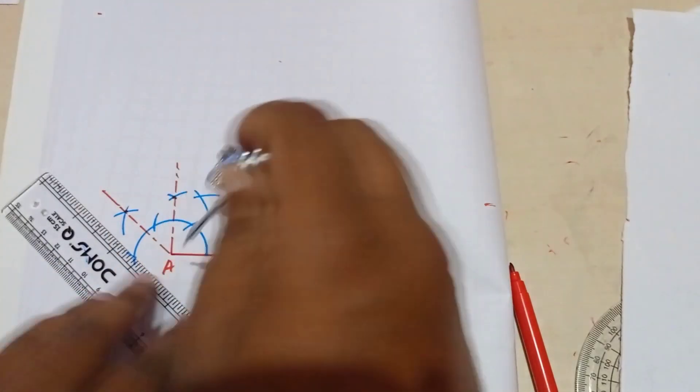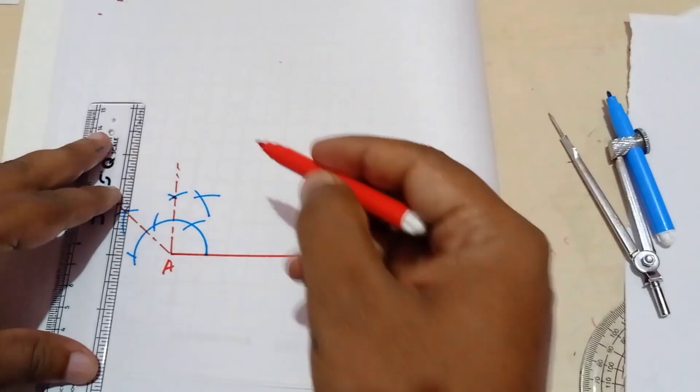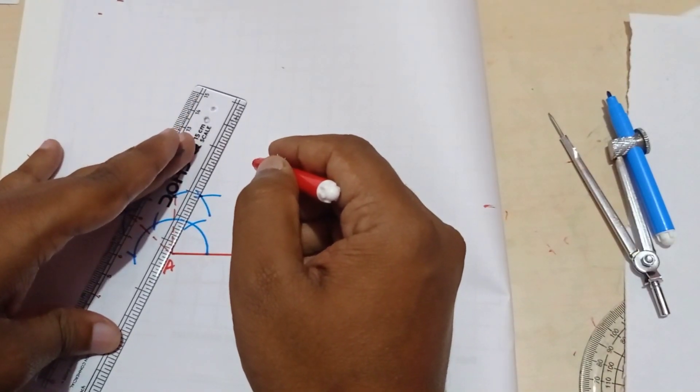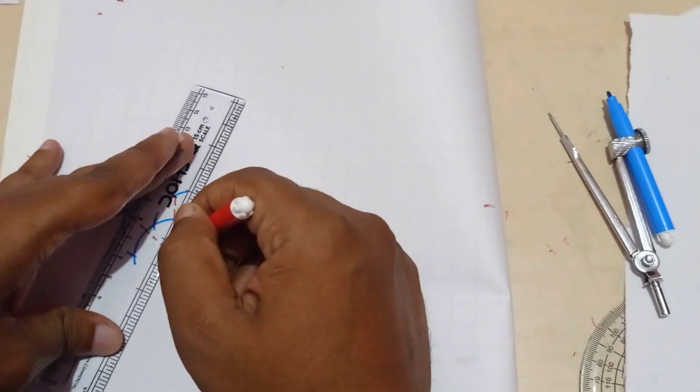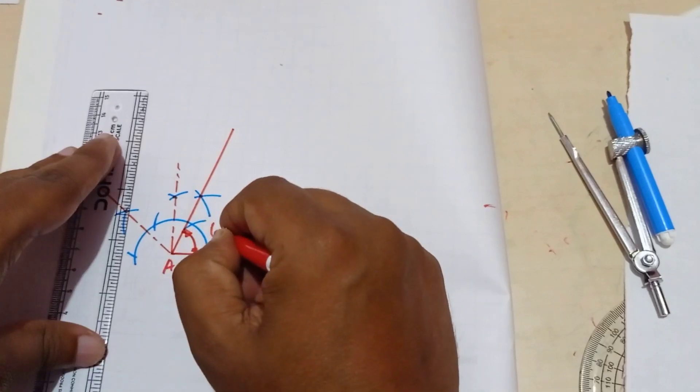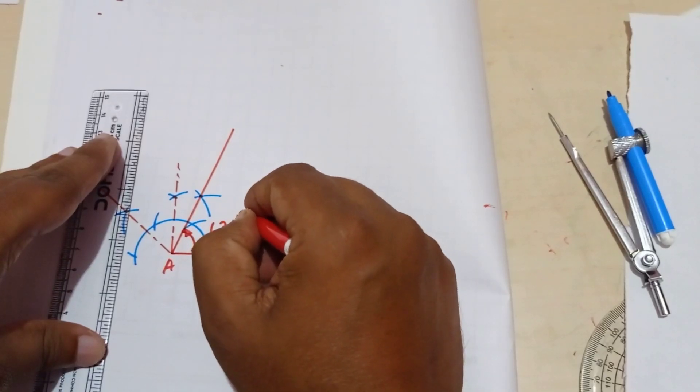Then again here. Now you join this point and this point. Now this is what 67.5 degree.